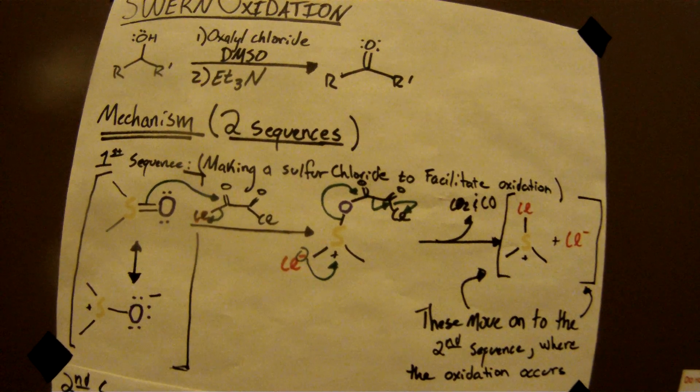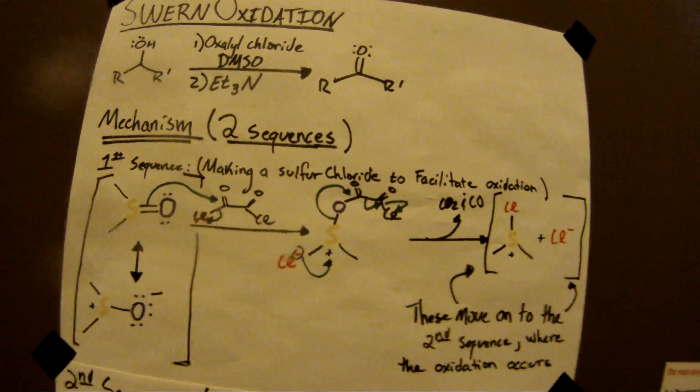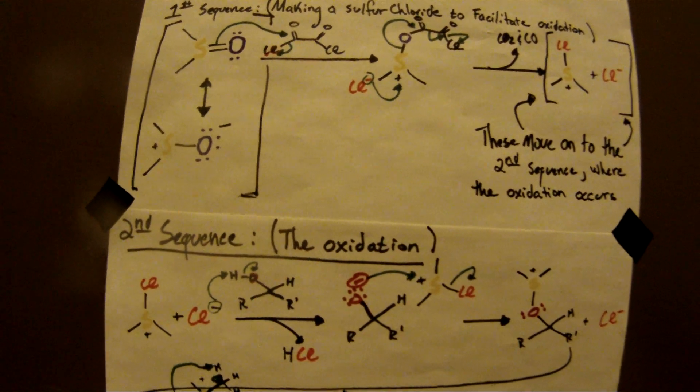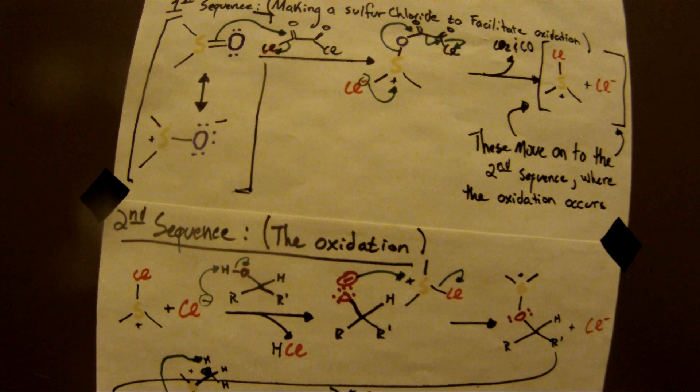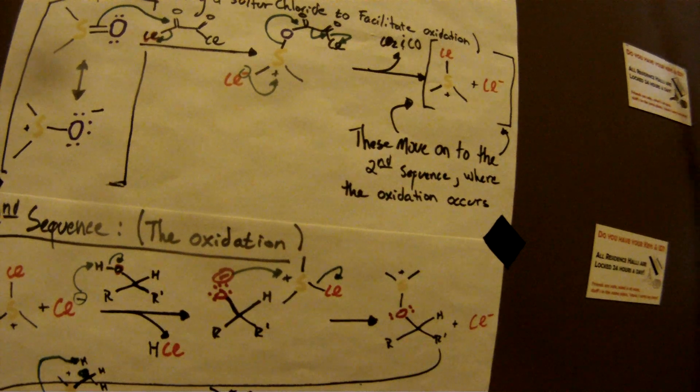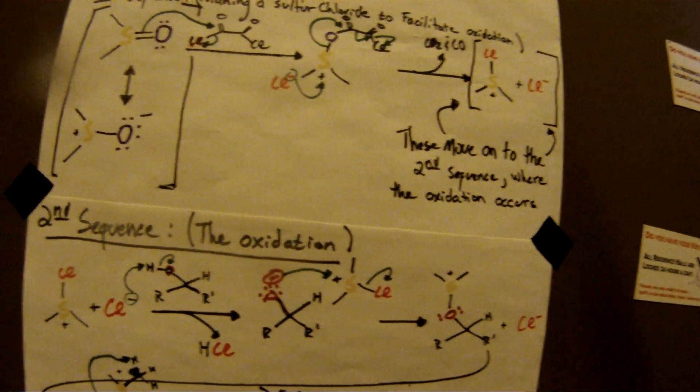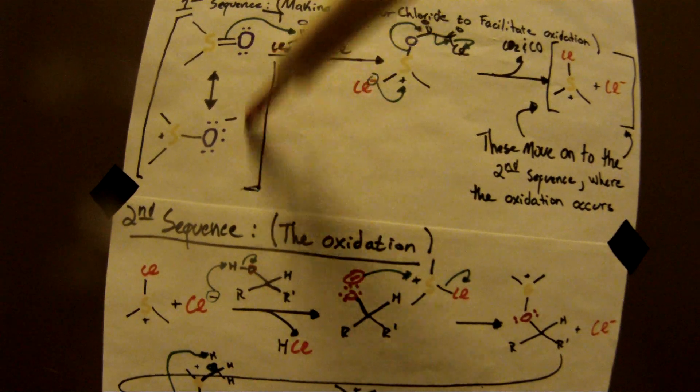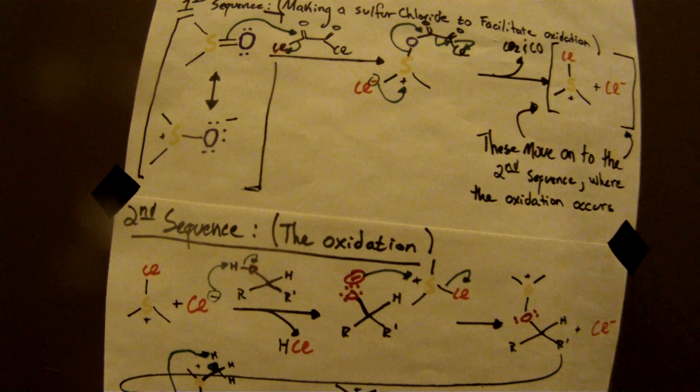And then you have two sequences to the mechanism. The first sequence, basically, just provides you with this at the end, so you can use that to make carbonyl. Basically, you start with DMSO. It has this resonance structure.